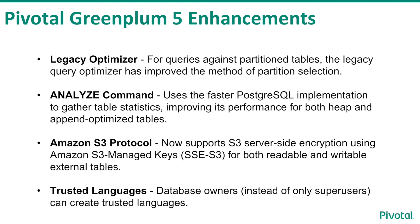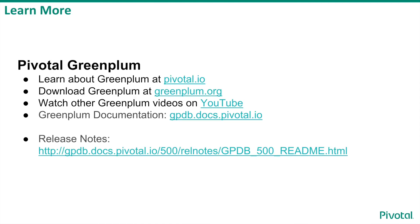These new features include the following. For queries against partition tables, the legacy query optimizer has improved the method of partition selection. The analyze command uses the faster Postgres implementation to gather table statistics, improving its performance for both heap and append-optimized tables. The Amazon S3 protocol now supports S3 server-side encryption using Amazon S3 managed keys for both readable and writable external tables. Now database owners, instead of only super users, can create trusted languages. For full details of the new Greenplum 5.0 release, visit the sites listed below. To review the complete list of product changes, feature enhancements, and new functionality, please review the release notes available at gpdb.docs.pivotal.io.